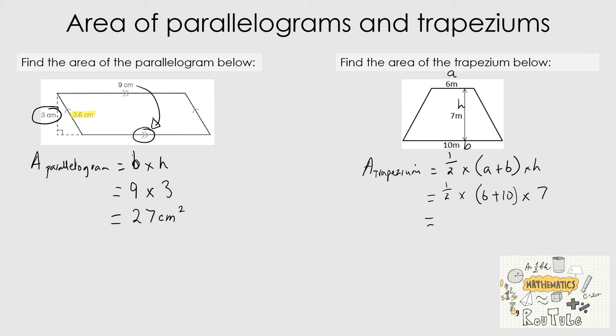Working through manually: one half multiplied by 16 multiplied by 7. Half of 16 is 8, and 8 times 7 is 56. So the area of the trapezium is 56 meters squared.